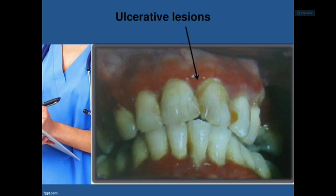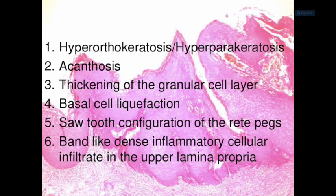The differential diagnoses for lichen planus include lichenoid reactions, leukoplakia, candidiasis (pseudomembranous or erythematous), pemphigus, cicatricial pemphigoid, erythema multiforme, syphilis with manifestations on the skin and oral cavity, recurrent aphthous stomatitis (RAS ulcers), and lupus erythematosus, which is again an autoimmune disease.